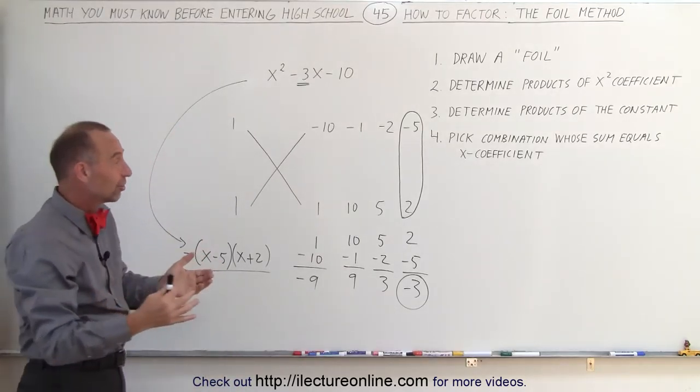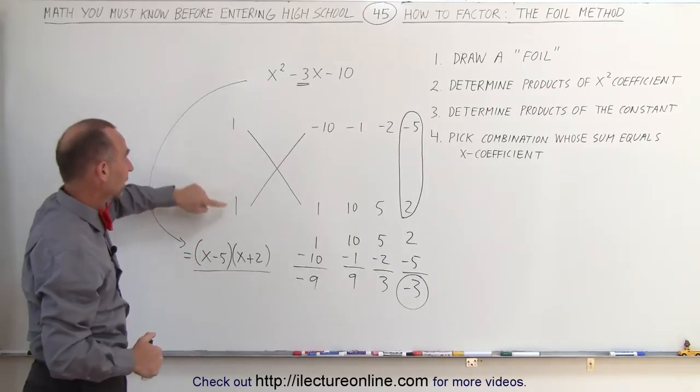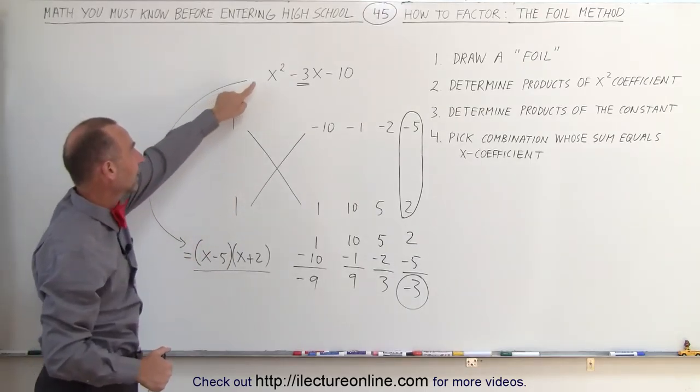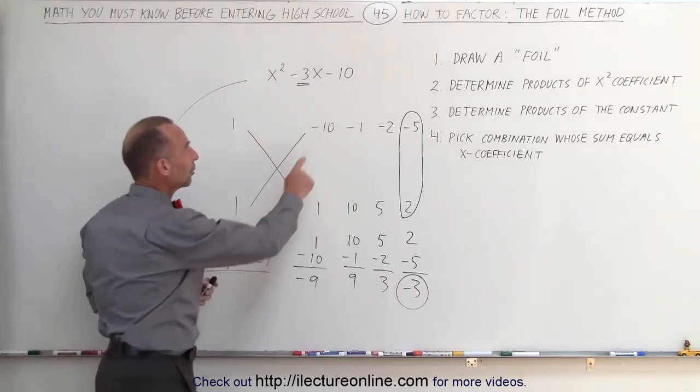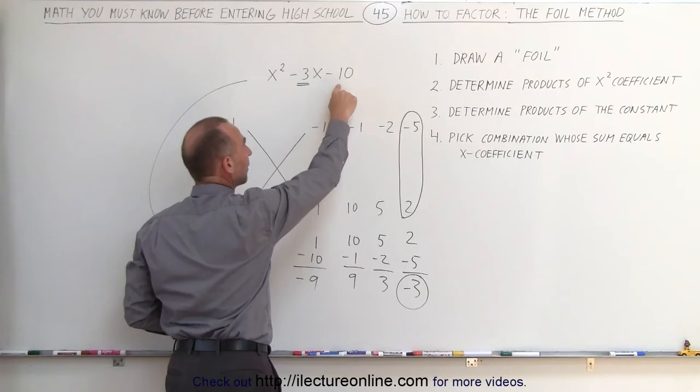It makes it easier to follow. It's just a simple process. All you have to do is plug in the coefficients. When you multiply them together, you get the x squared term. And here, you put in all the combination numbers. When you multiply these two numbers together, you get a minus 10.